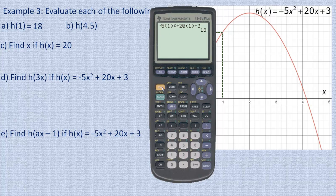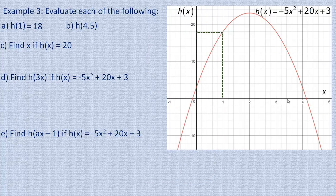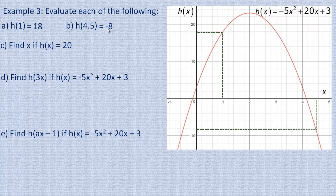For h of 4.5, if we have the function we substitute 4.5 in place of x. The calculation gives approximately negative 8.25. On the graph, 4.5 is located here — going down to the graph and across, it looks like around negative 8. Reading from the graph may not be exact because of decimals, but the function gives a more precise answer of negative 8.25.